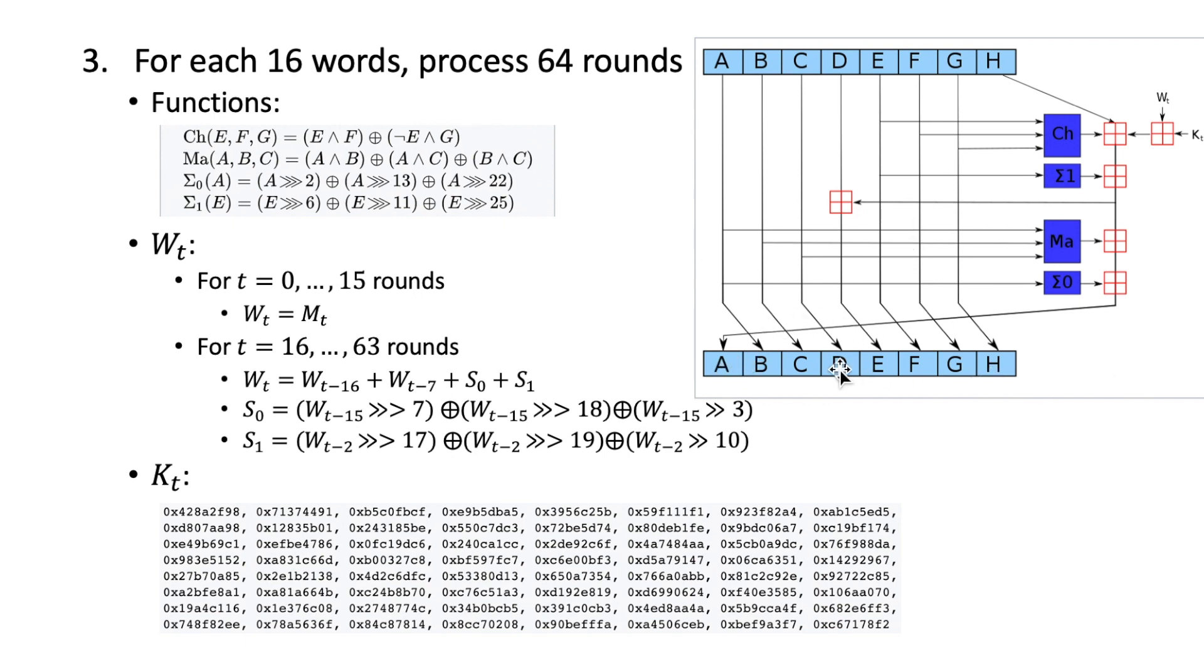Now let's see these four functions. For the first one, the Ch function, it takes three inputs E, F, G, and the operation will be E AND F XOR with NOT E AND G.